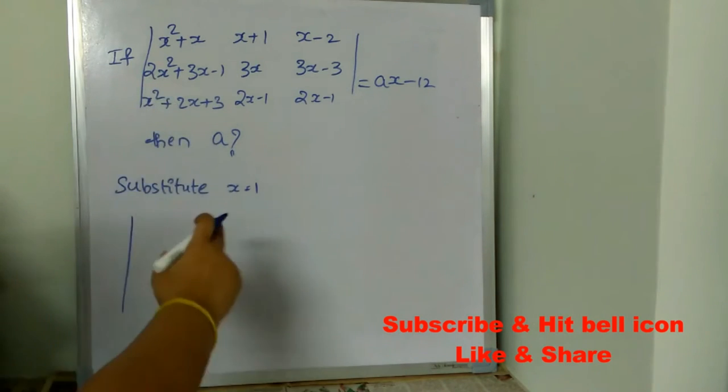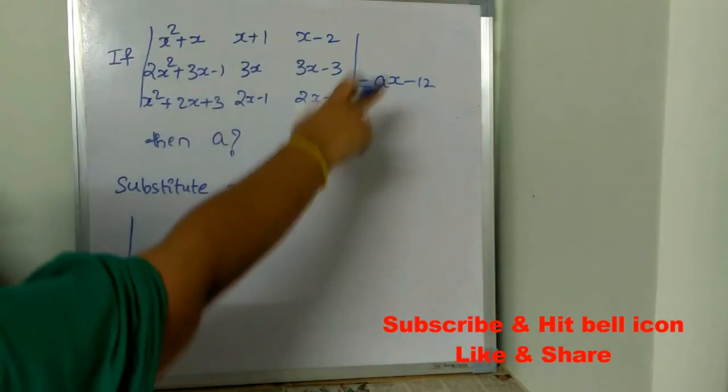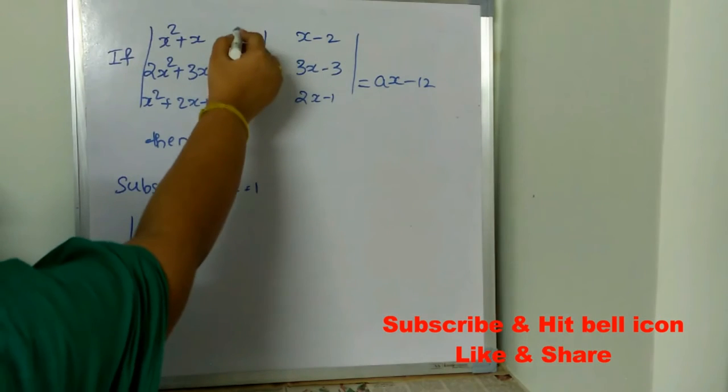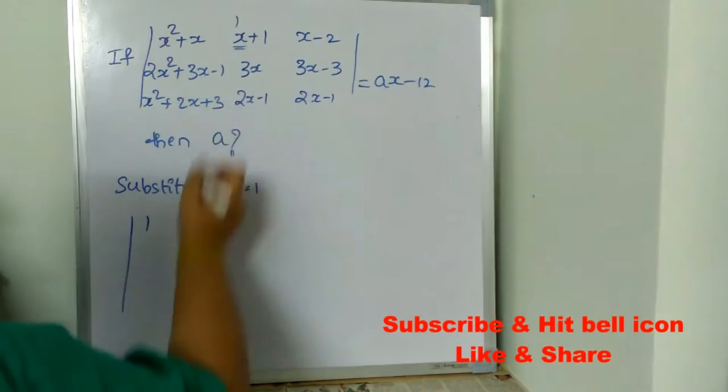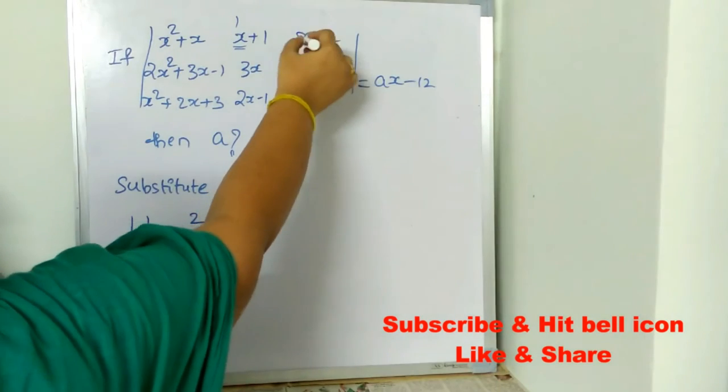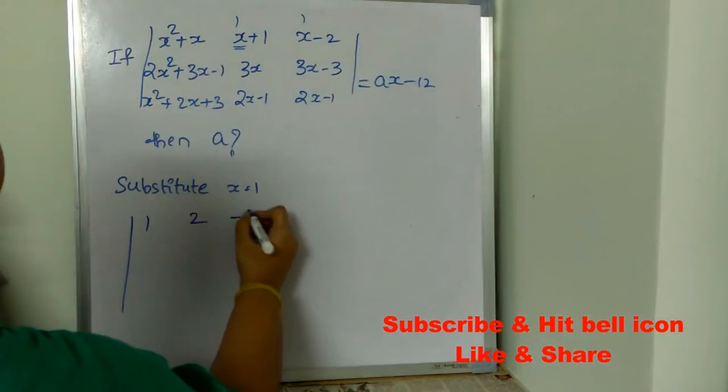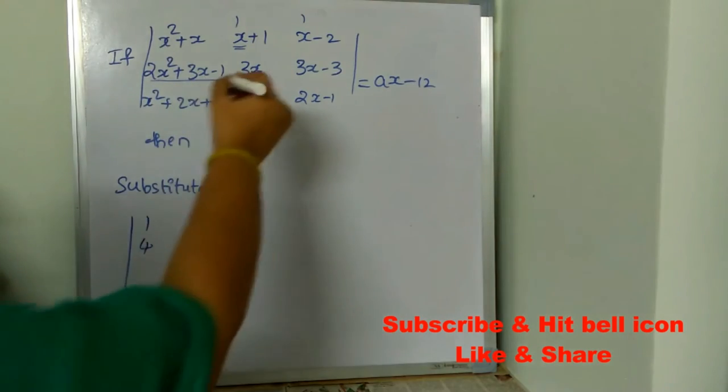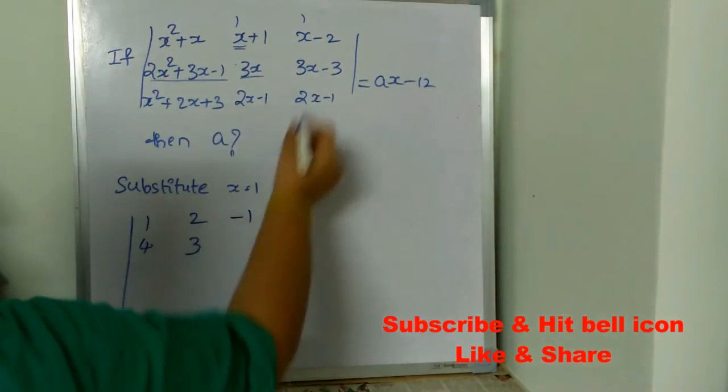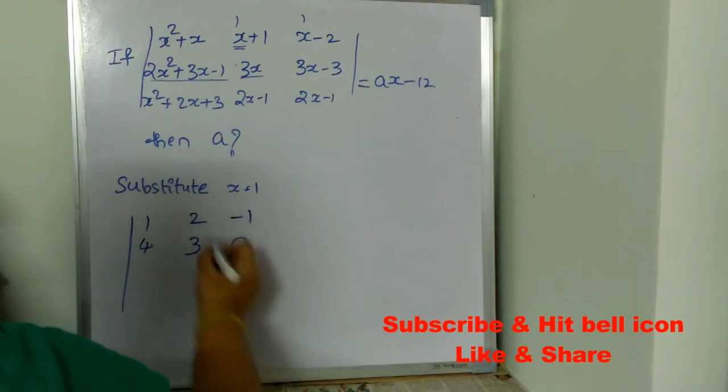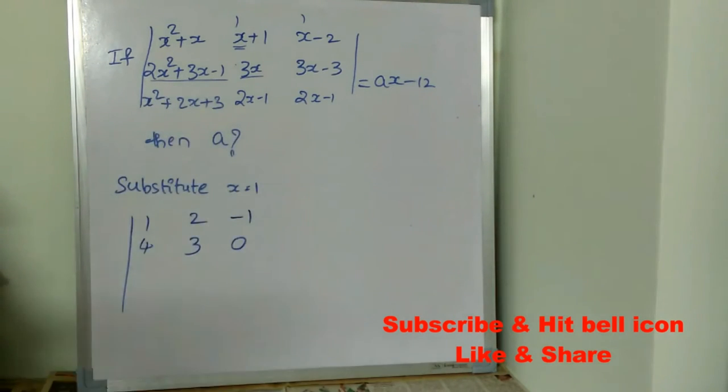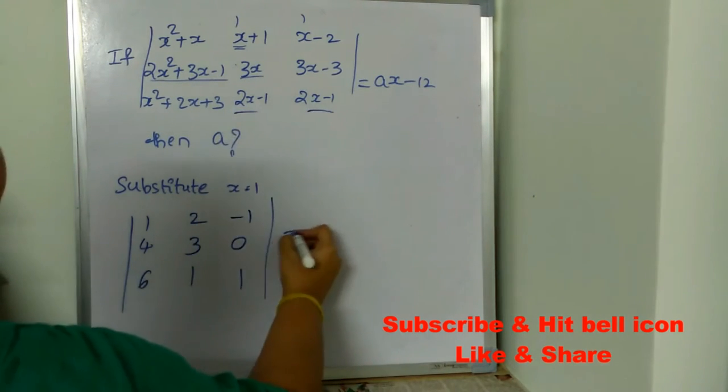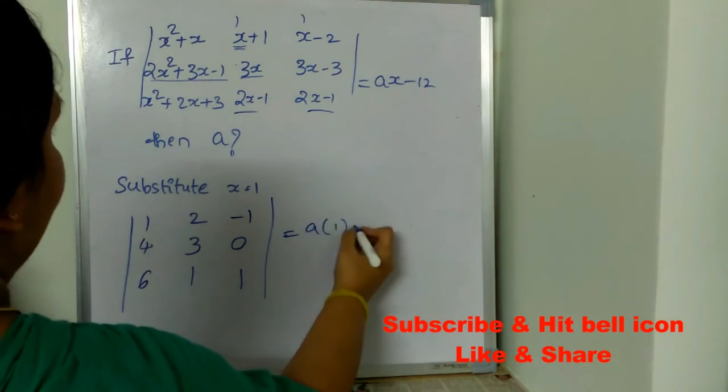We are substituting 1 in the place of x. 1 squared plus 1 is 2, x plus 1 is 2, x minus 2 is minus 1. If you substitute 1 in the place of x, you will get 4. Here 3 times 1 is 3, 3x minus 3 is 0. So here you will be getting 6, 1, 1.